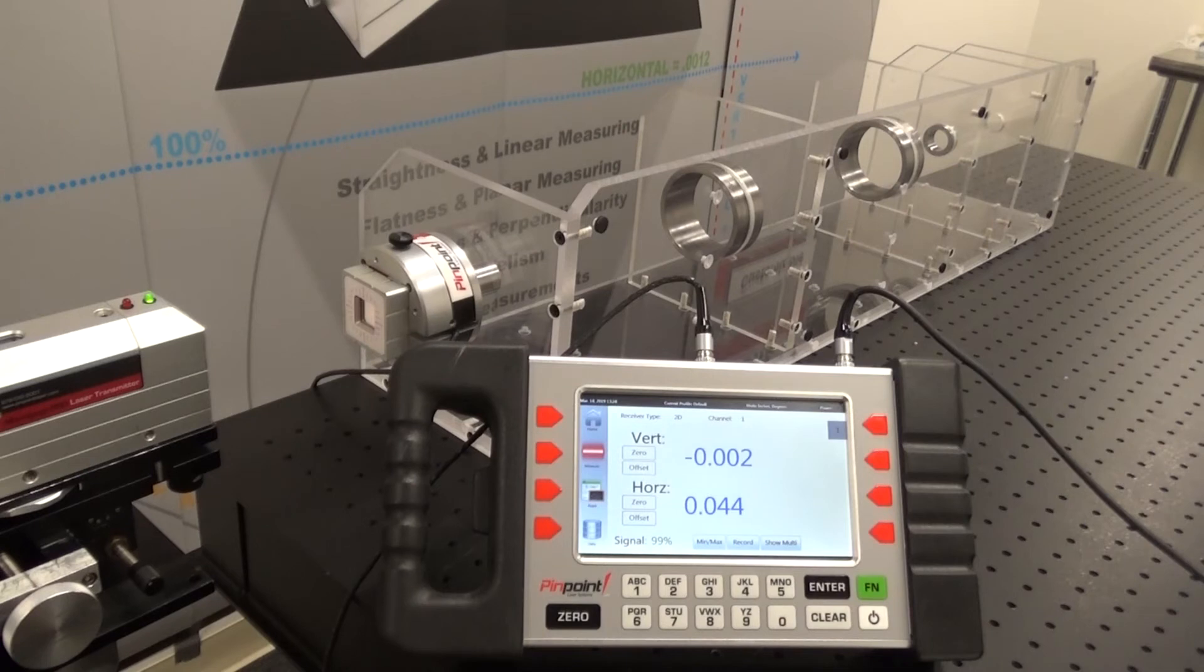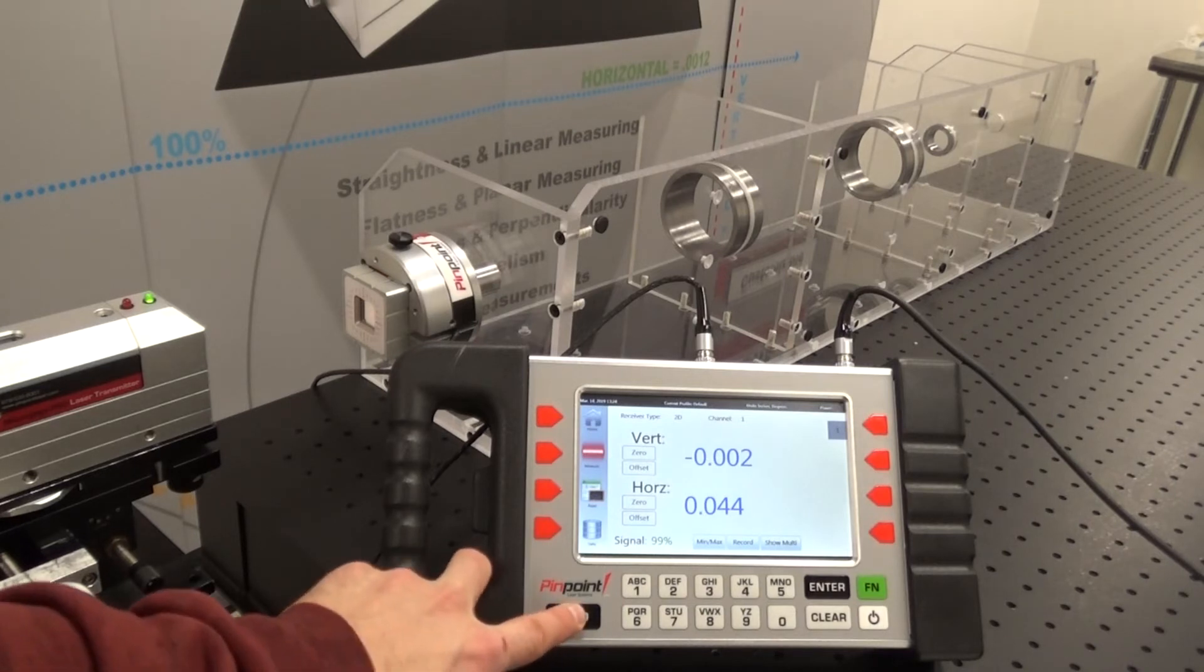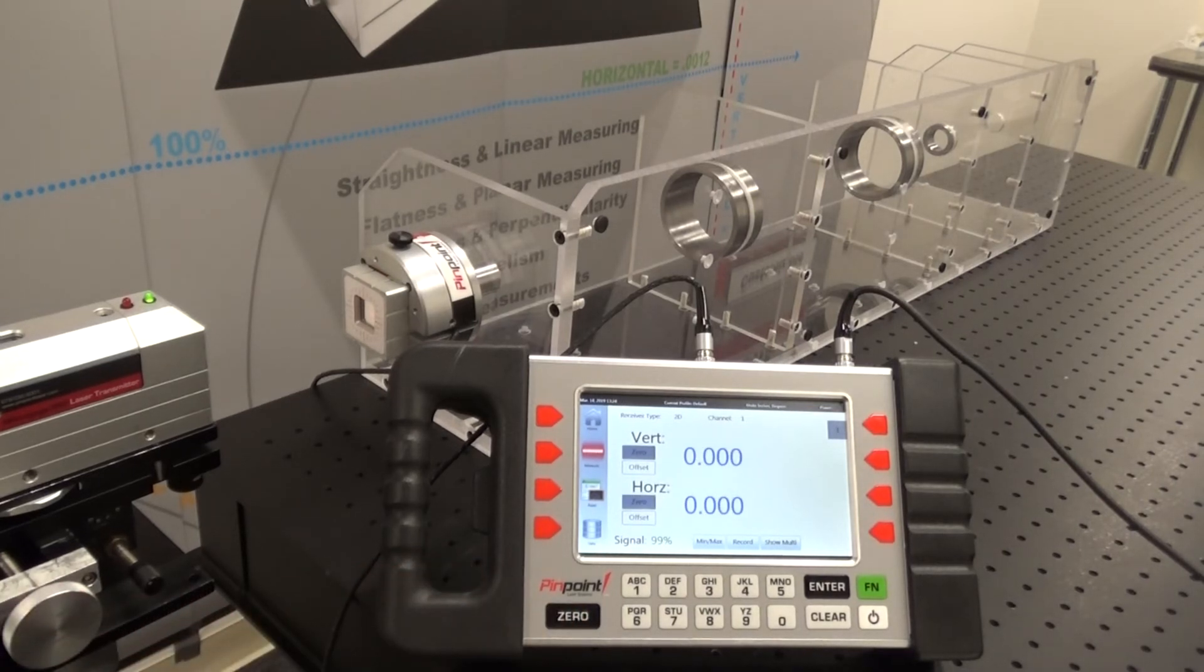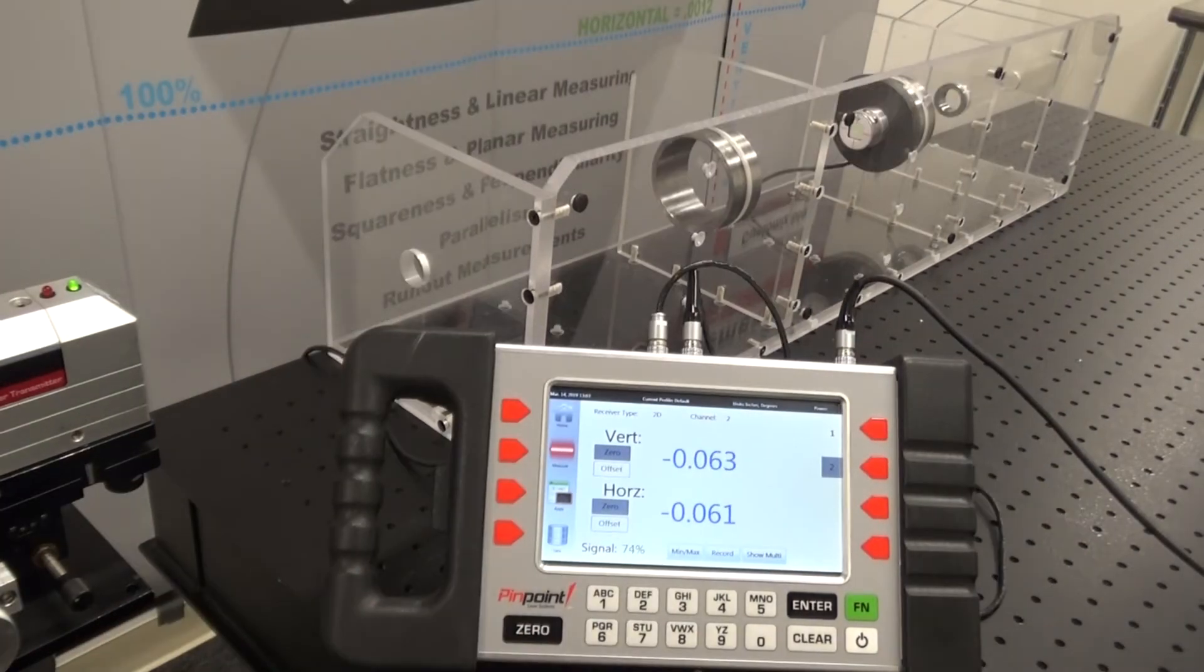Next, we can bring the receiver back to the front bore to confirm alignment. The display indicates that we are bucked in within a thousandth of an inch over the length of the bores. We can zero out the reading and now measure and align all middle bores to this well-established reference line.